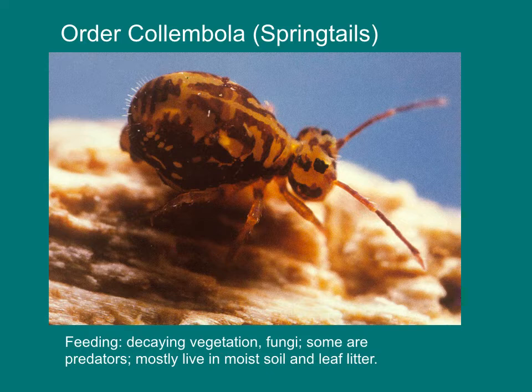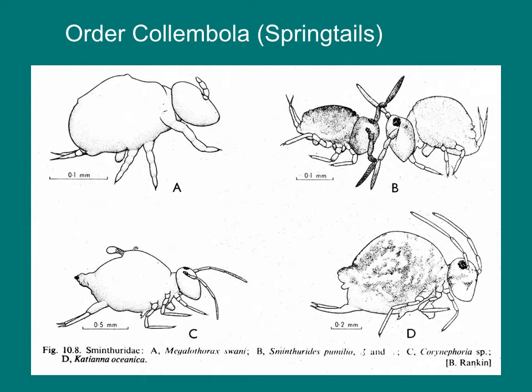One early wingless insect order is Collembola, the springtails. Springtails feed on decaying vegetation and fungi. Some are predators, and they mostly live in moist soil and leaf litter. Springtails have a device on their abdomen called a furcula that they use to jump when disturbed. These tiny creatures have elaborate mating dances that we will cover when we get to insect mating.